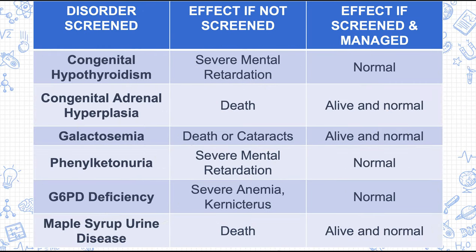The conditions screened include congenital hypothyroidism, congenital adrenal hyperplasia, galactosemia, phenylketonuria, G6PD deficiency or glucose-6-phosphate dehydrogenase deficiency, and maple syrup urine disease. It is very important to take note of these conditions because they are crucial for your baby.